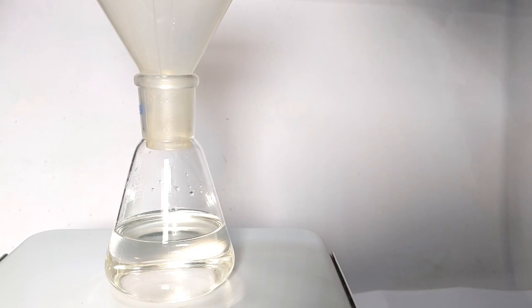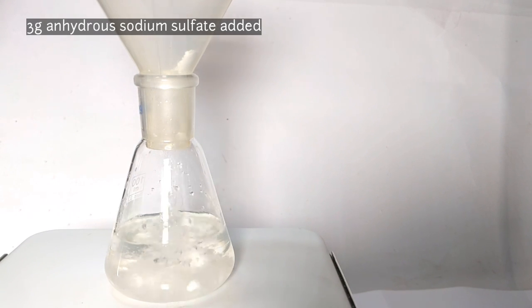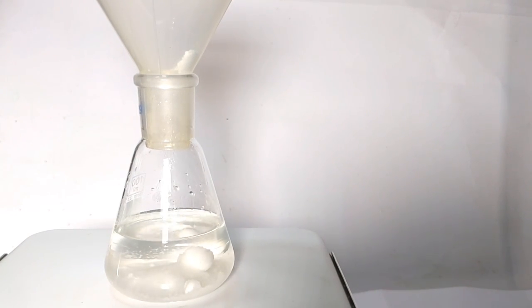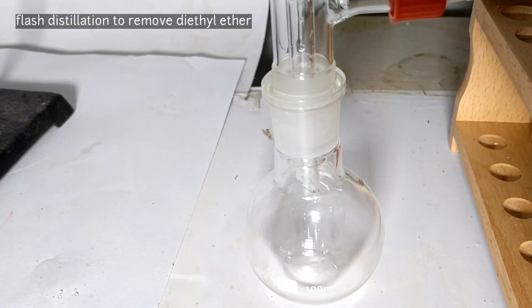All the ether washings were added together with the initial cyclohexanone layer and some 3 grams of anhydrous sodium sulfate was added to dry the mixture. A flash distillation was then carried out to remove the diethyl ether.